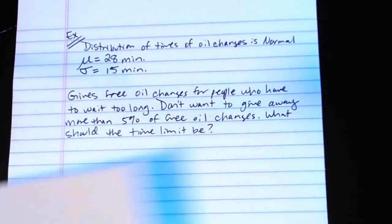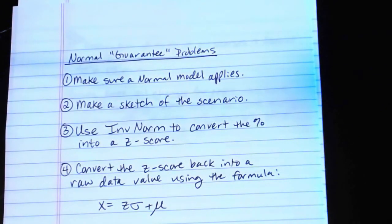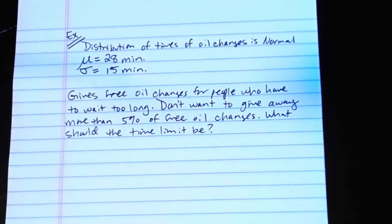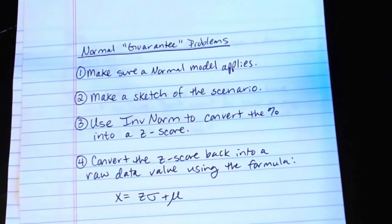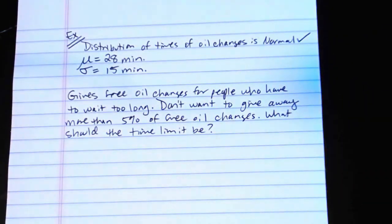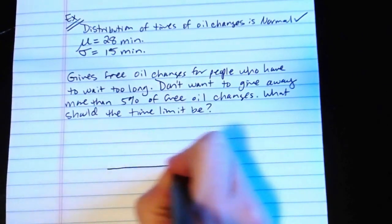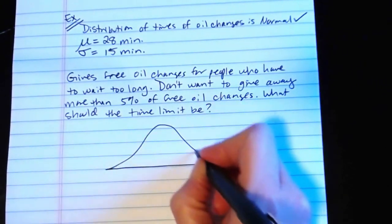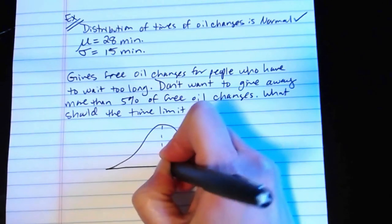This is kind of like if you go to a pizza place and it's like you get your pizza in under 30 minutes or it's free. This is the same kind of idea except this is going to be a cap for oil change times. And anybody who waits longer than this time is going to get a free oil change. But if we don't want to give away more than 5% of oil changes for free, we want to figure out how long do we set that time limit. So again, we want to go through our process. Make sure a normal model applies. Says right off, distribution of times of oil changes is normal. Check. Make a sketch of the scenario. So here, since it's normal, we can make a nice bell-shaped curve, standard normal curve centered at zero.